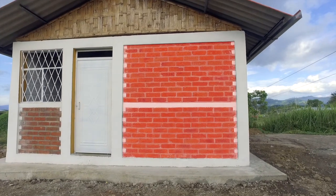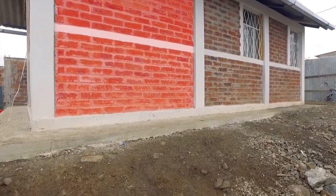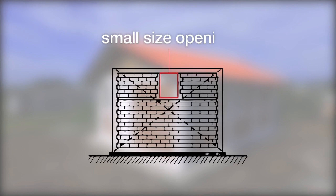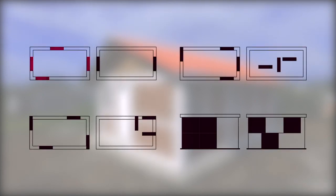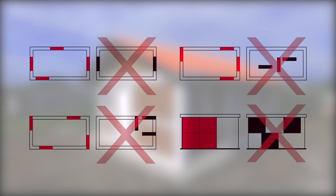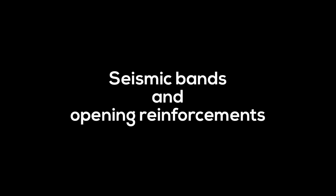A shear wall is a solid wall panel whose function is to brace the building. Shear walls should have no openings. If they do, the openings should be of a small size and located away from the wall panel diagonals. In a building, the shear walls should be placed in both directions of the construction, as much as possible on the outer walls, evenly distributed on the building layout, on each floor and placed respecting vertical continuity.